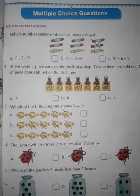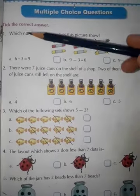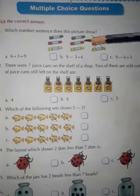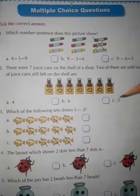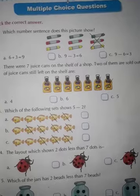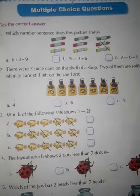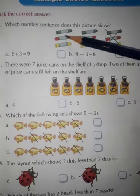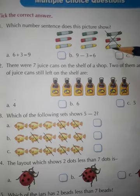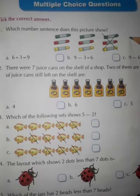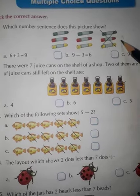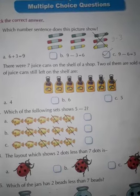Multiple choice questions. Tick the correct answer. Which number sentence does this picture show? You can see this picture — here are crayons. How many crayons are here? One, two, three, four, five, six, seven, eight, nine. And how many crayons are crossed out? One, two, three. That means nine minus three. So which is right? B. So you tick here.